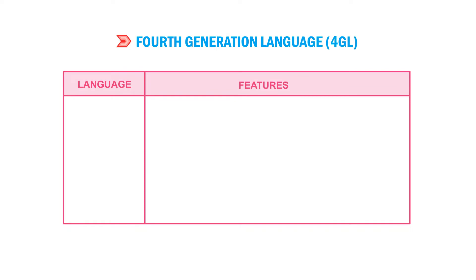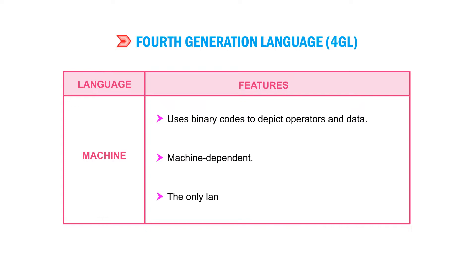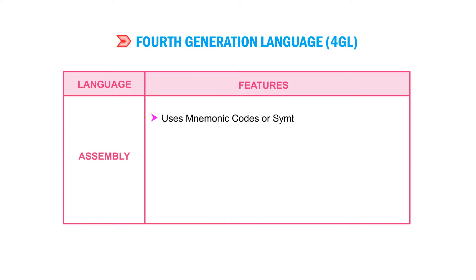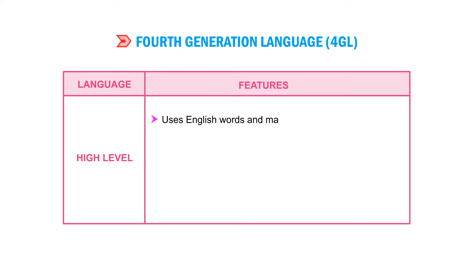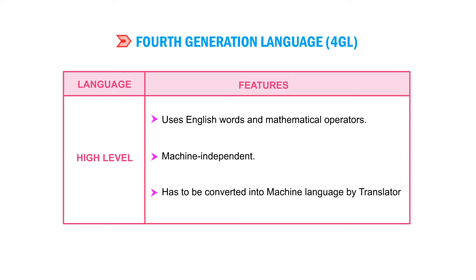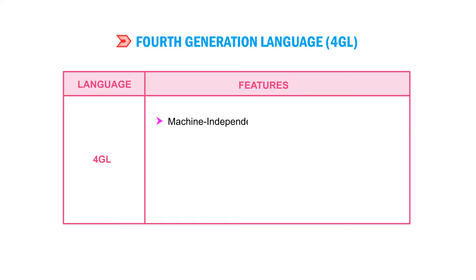Let us briefly sum up computer languages and their features. Machine language uses binary codes to depict operators and data; it is machine dependent and the only language directly understood by a computer. Assembly language uses mnemonic codes or symbols instead of binary numbers; it is machine dependent and must be converted by assemblers. High-level language uses English words and mathematical operators; it is machine independent and requires interpreter or compiler translation. 4GL is machine independent, requires minimal user skills, and serves as an application development tool.